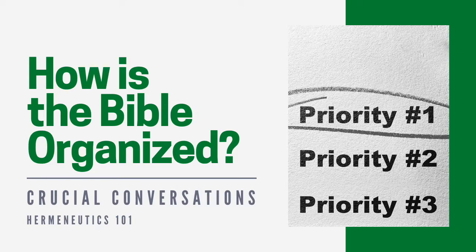The second section of the New Testament is Paul's letters, going from Romans to Philemon. They're named after the recipients, not the author — because they'd all be named Paul otherwise. The ones named for cities are written to the churches in or near that city: Romans to the church in Rome, Corinthians to the church in Corinth, Galatians to the churches in the region of Galatia. At the end of Paul's letters you get letters to individuals — Timothy, Titus, and Philemon.